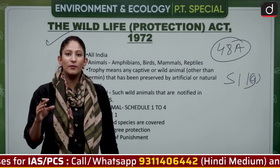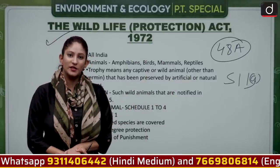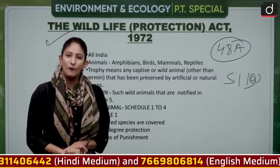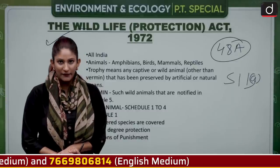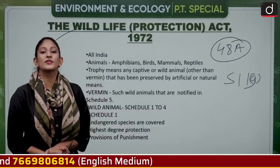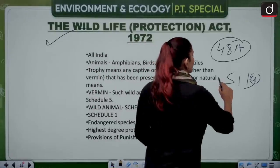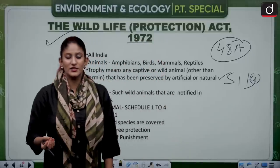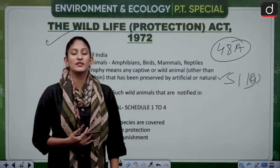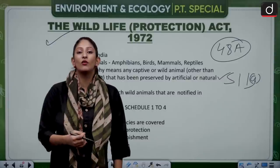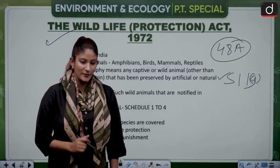Article 48A is the Directive Principle of State Policy — it wants the state to protect wildlife as well as forests, putting an obligation on the government. Article 51, Clause 1, Sub-clause G is a Fundamental Duty — it wants us, the citizens of India, to protect and improve the wildlife and natural environment.